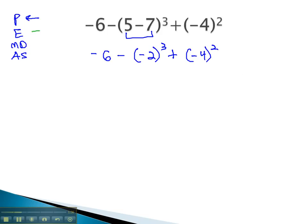Now that all the parentheses are simplified, we go to the exponents. We have an exponent on the negative 2 and the negative 4. This gives us negative 6 minus negative 2 cubed. Because the negative 2 is cubed, it's an odd exponent, so we get a negative answer. And 2 cubed is 8, 2 times 2 times 2, plus negative 4 squared. Because we have an even exponent, we know the answer is positive, and 4 squared is 16.